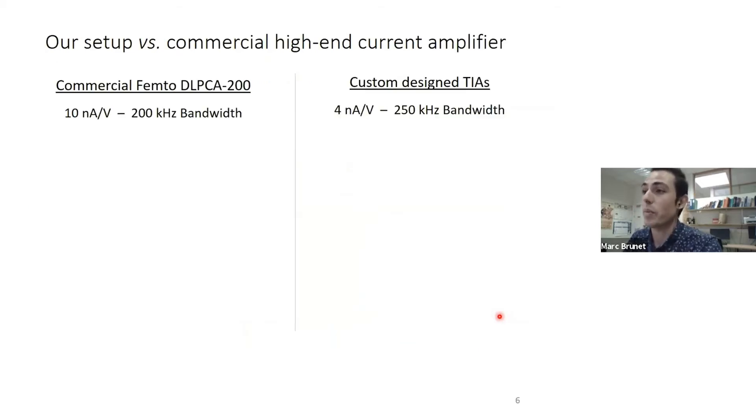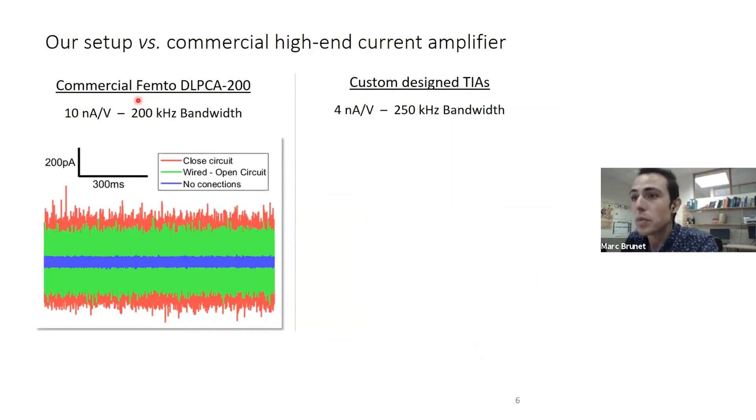Here we would like to compare our setup with a commercial high-end current amplifier. On the left it displays a current trace of this commercially available current amplifier which has an amplification magnitude of 10 nanoamps per volt and a bandwidth of 200 kilohertz. In blue we see the current trace which corresponds to the current amplifier completely unwired. Therefore, this current trace corresponds to the intrinsic noise, the minimum noise that this amplifier could provide.